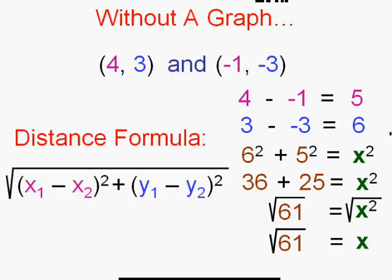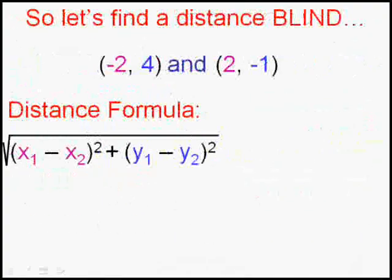Now, you could always sketch a graph if you get confused and use the Pythagorean theorem, because that's just what this is, just another form of the Pythagorean theorem. Okay, let's do one more, and this time we'll do it blind. We're not going to be able to see the graph. We're going to find the distance between the points negative 2, 4, and 2, negative 1, using this distance formula. That's what it's for.